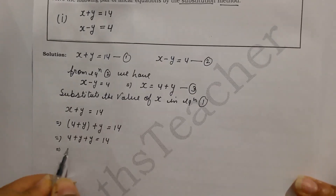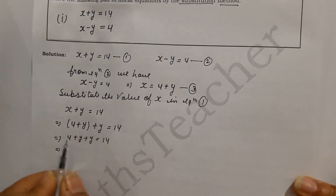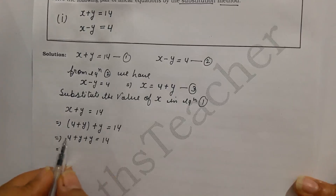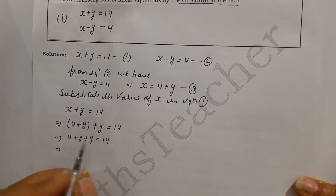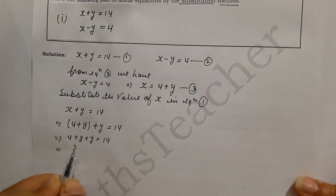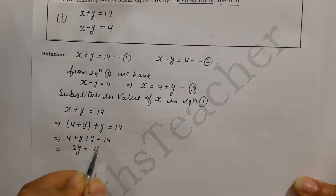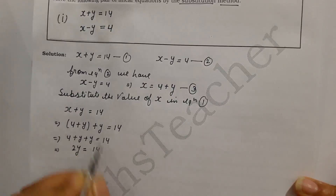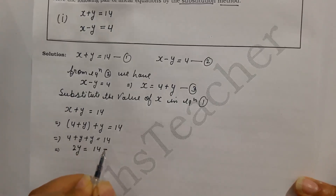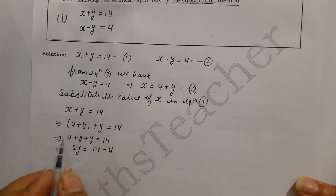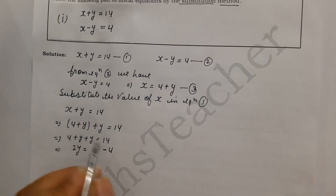We keep the variable on the left and the numbers on the right. So y plus y gives us 2y. When the number 4 transfers to the right side, plus becomes minus: 2y equals 14 minus 4.